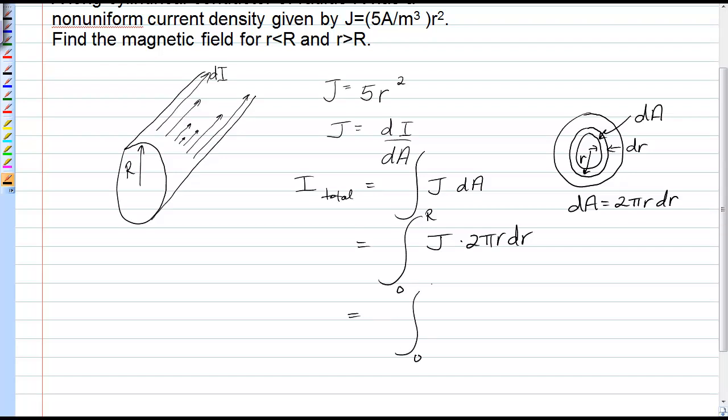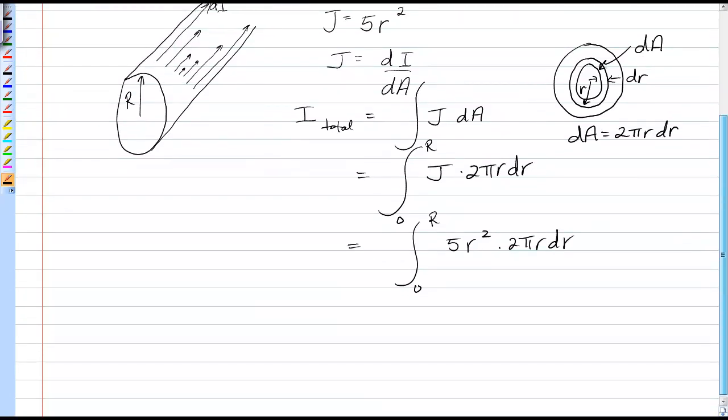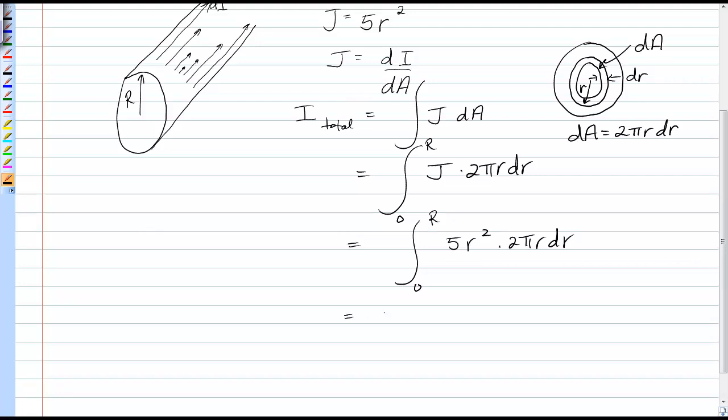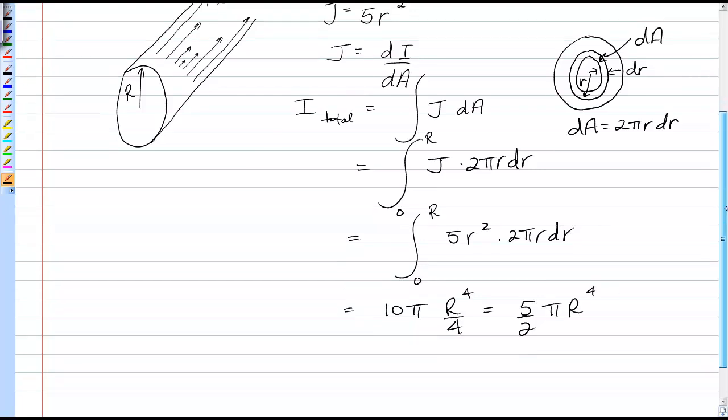So in our case, let's find this total current. For j, we're going to put 5r² times 2πr dr, which gives us 10πr³ in the integral, so it becomes r to the fourth over 4, or 5/2 π R to the fourth. And that is just a number, that is constant.